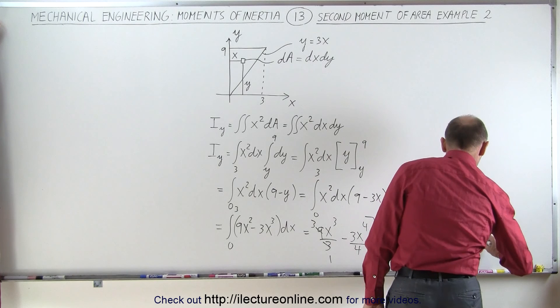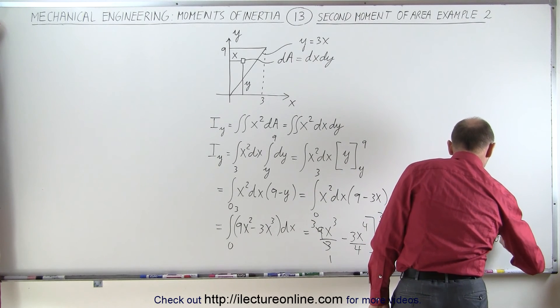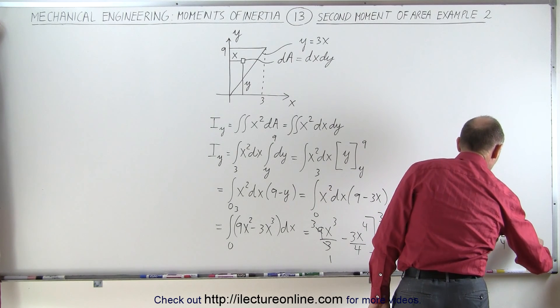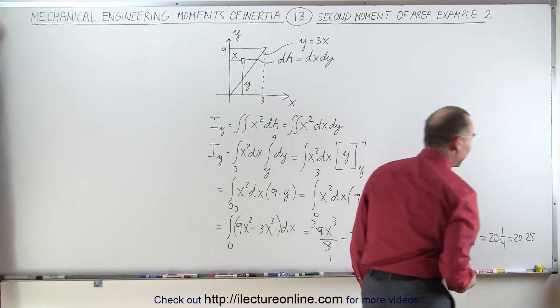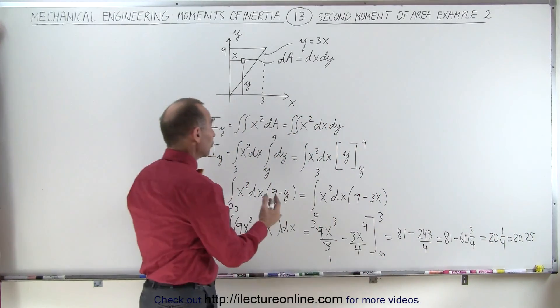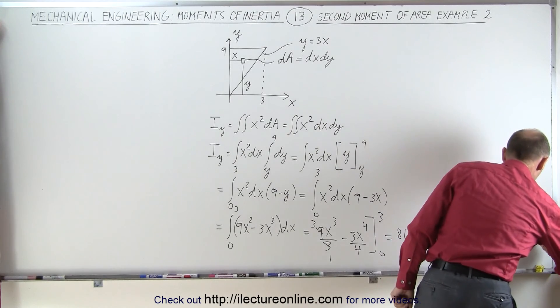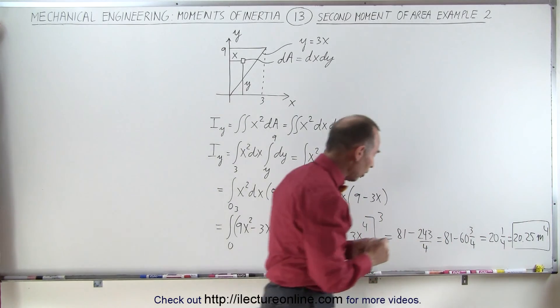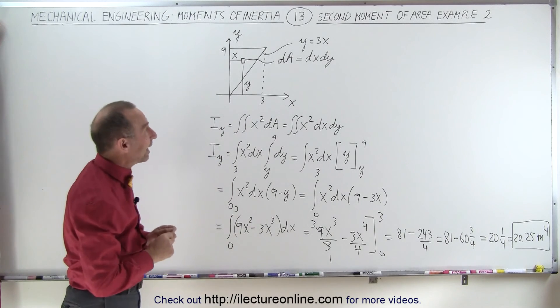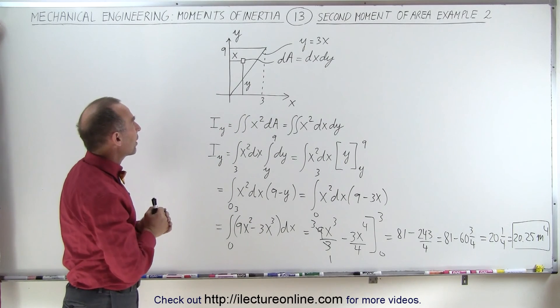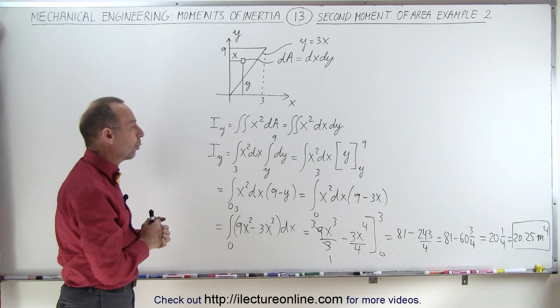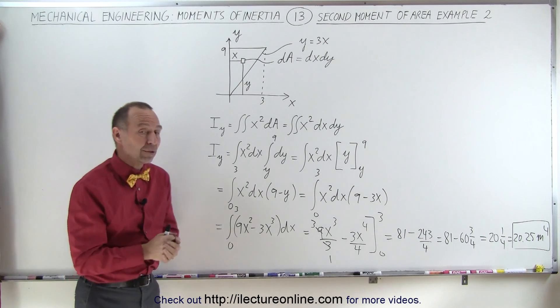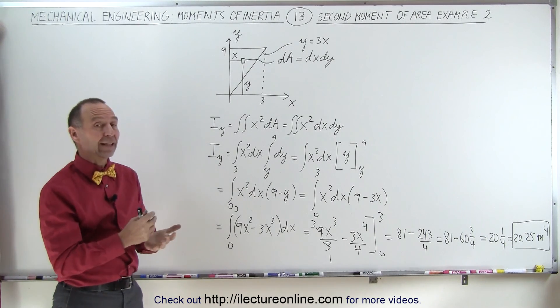And that means we're left with 20 and a quarter, which is equal to 20.25. And units - again, if this was in standard units, we end with meters to the 4th power. And so that's the answer. That is called the second moment of area of that particular triangle with respect to the y-axis, and it's in terms of meters to the 4th power. And that's how it's done.